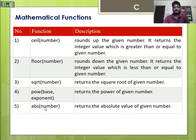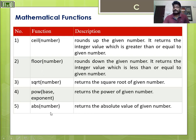Then there is abs — the absolute value of a given number can be returned using the abs function. So these are the mathematical functions: ceil, floor, sqrt, pow, and abs — absolute value.